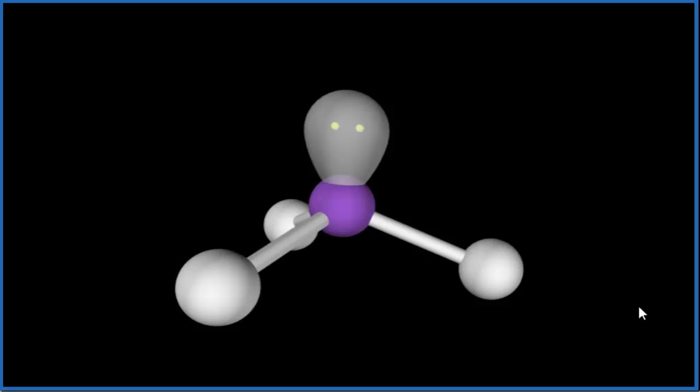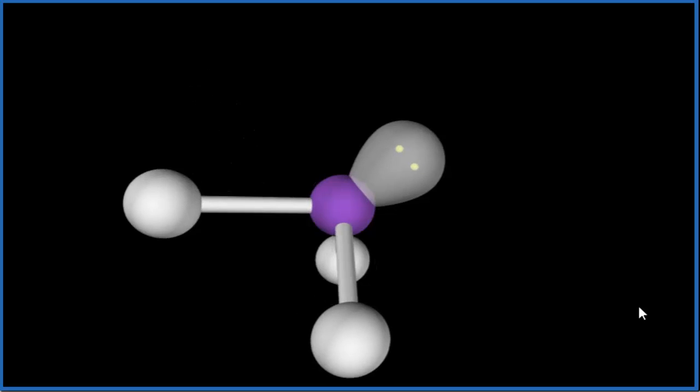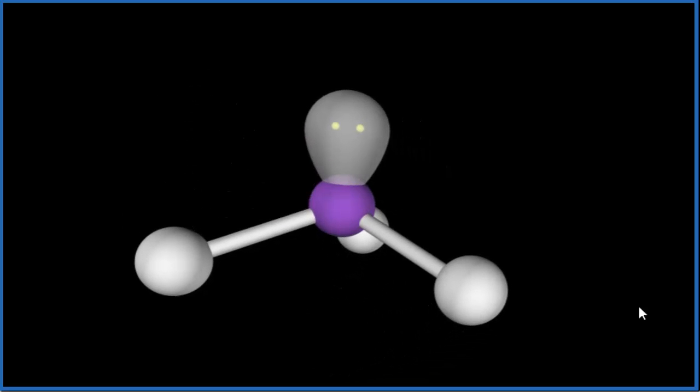If you looked at the electron geometry, you need to take into account the lone pair. That would mean that you have a tetrahedral electron geometry. But the molecular geometry, trigonal pyramidal.